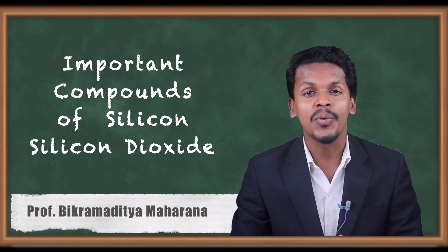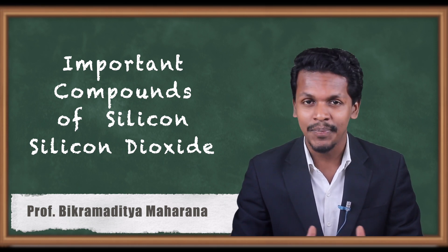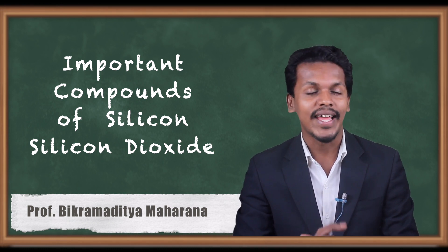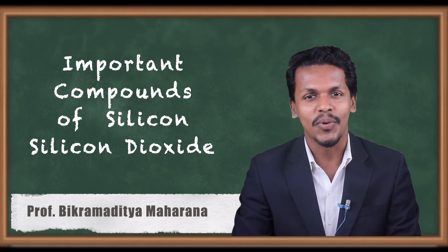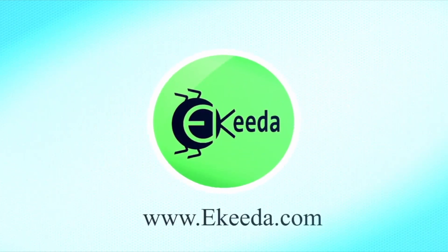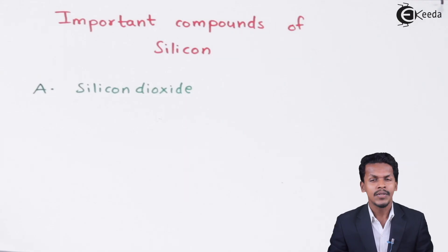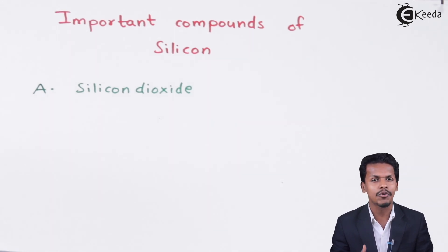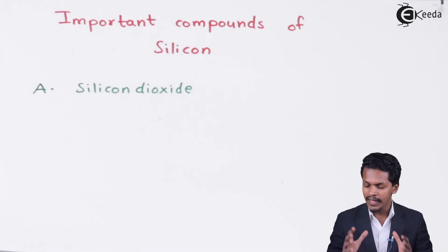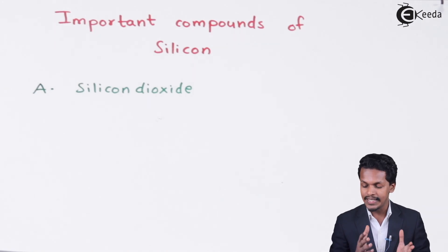Similarly, we are going to talk about the important components of silicon. There are various components of silicon, and now we are going to talk about silicon dioxide, quartz, and zeolites. So in this topic we are going to talk about silicon dioxide.